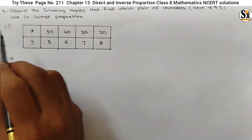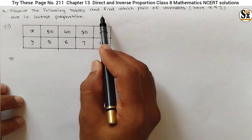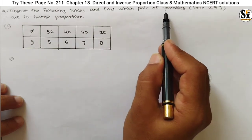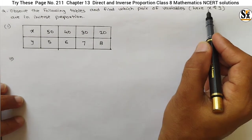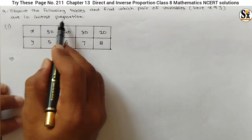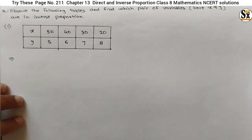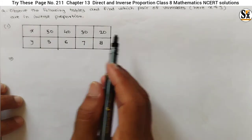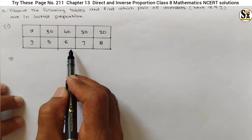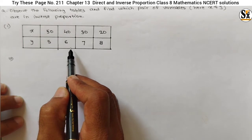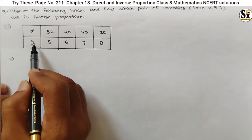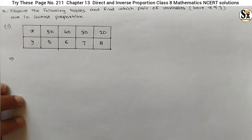The question under this section says: observe the following tables and find which pair of variables — x and y — are in inverse proportion. Three tables are given, and we have to find in which table the pair of variables are in inverse proportion.